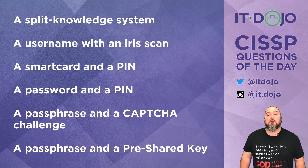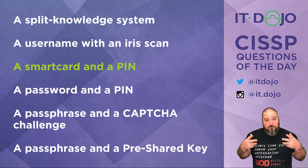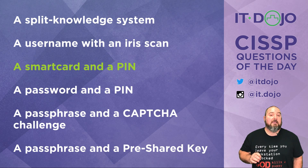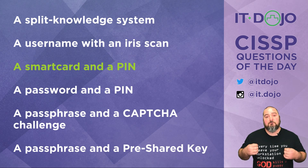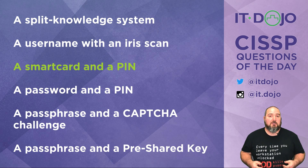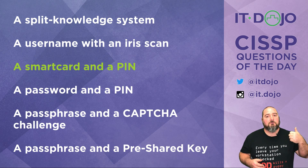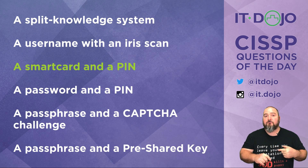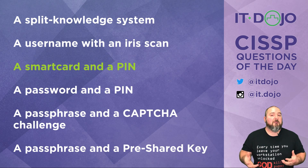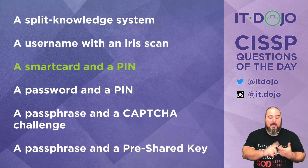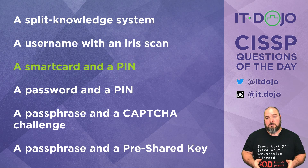Next: a smart card and a PIN. Yes — that's two-factor. What makes something two-factor is that it must involve two different types of authentication: something you know, something you have, or something you are. Something you know — a password or a PIN. Something you have — like a smart card or a physical token. Something you are — something biometric. In this case we have two out of three: we know something (a PIN) and we have something (a smart card). That is considered multi-factor authentication — 2FA.